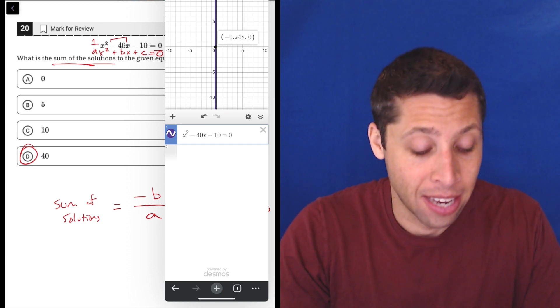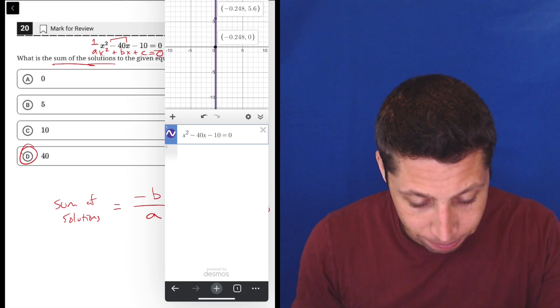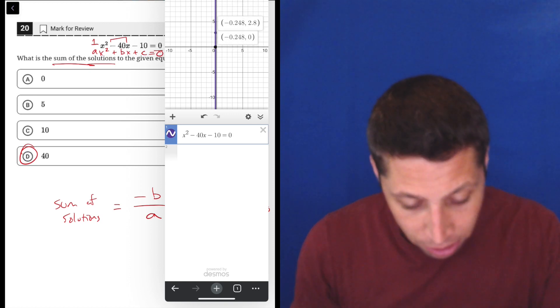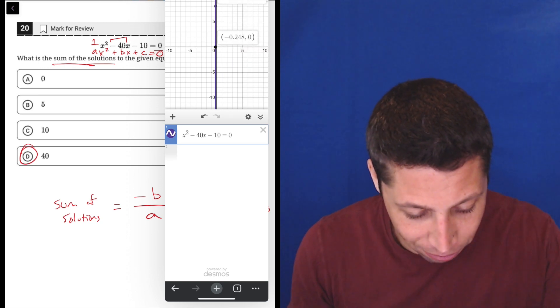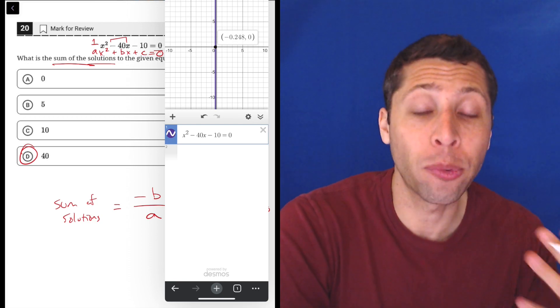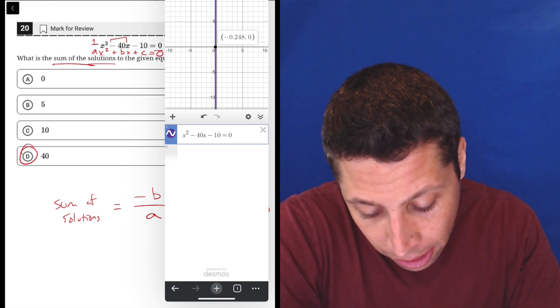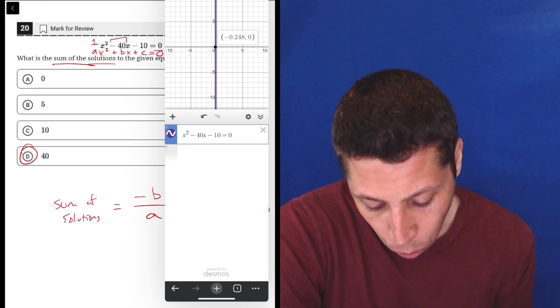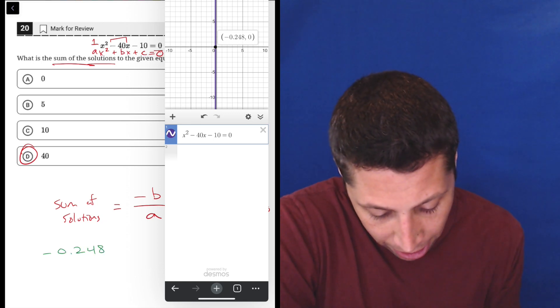Now, if I follow this line up and down, notice, the Y coordinate is changing, but the X is always the same. It's that negative 248, or 0.248. So, that is one of the solutions. Basically, what I'm doing when I'm graphing this is the calculator is solving this equation for me, and it's giving me a solution.